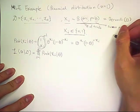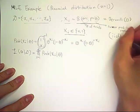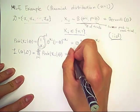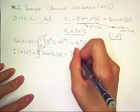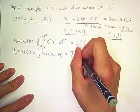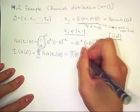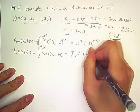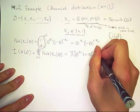And we have an iid assumption behind this. So this can be rewritten as a product of theta to the x sub i times 1 minus theta to the 1 minus x sub i.